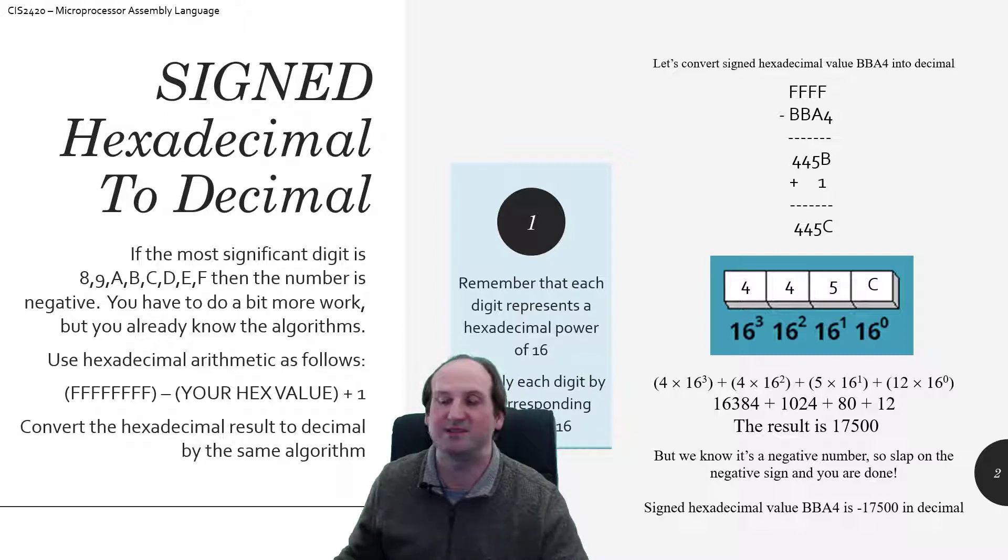So 4 hex digits, so 4 F's go up top, and I subtract off BBA4. What do I get? So F minus 4. 15 minus 4 is 11, so that's a B. So 15 minus A is 10, that's a 5. 15 minus B, which is an 11, that's a 4. And then the same, 15 minus 11 is a 4.